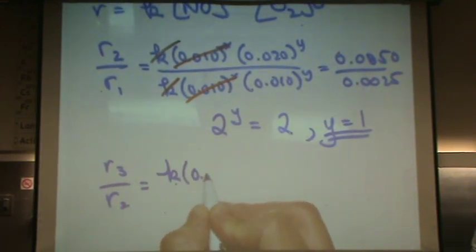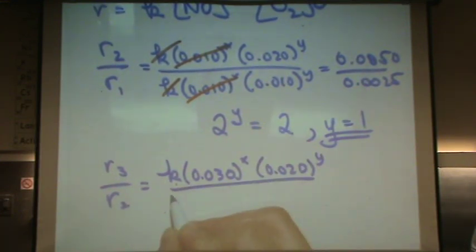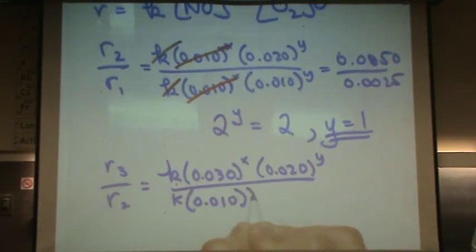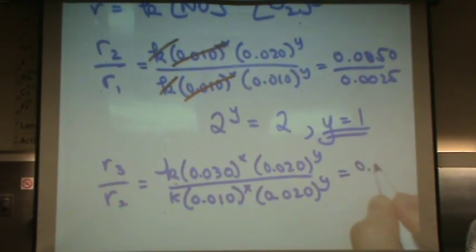So, that's k times 0.030 to the x, 0.020 to the y, divided by k, 0.010 to the x, 0.020 to the y. Again, all these numbers from the table, 0.0450 and 0.0050.